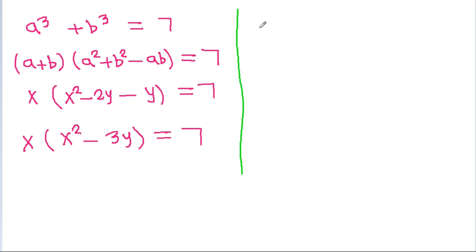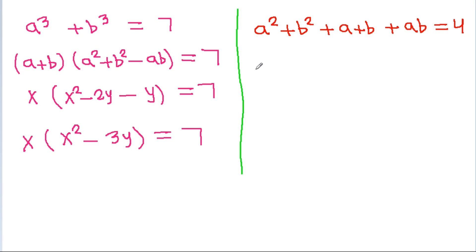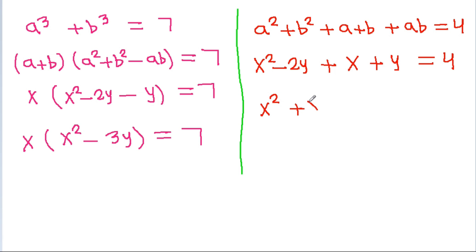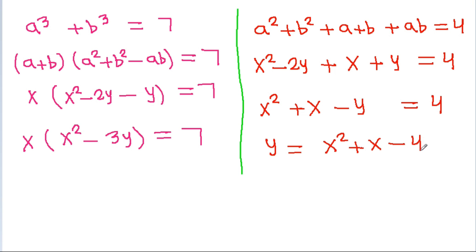We have given that a² + b² + a + b + ab is equal to 4. Substituting, a² + b² is x² − 2y, a + b is x, and ab is y, so we get x² − 2y + x + y is equal to 4, which gives x² + x − y is equal to 4. Therefore y is equal to x² + x − 4.